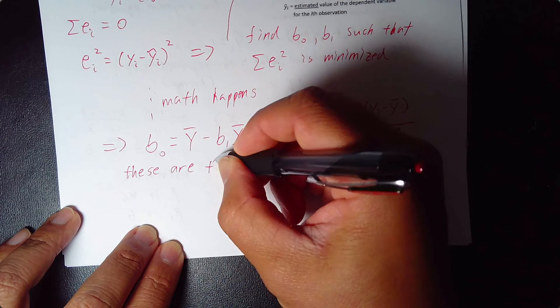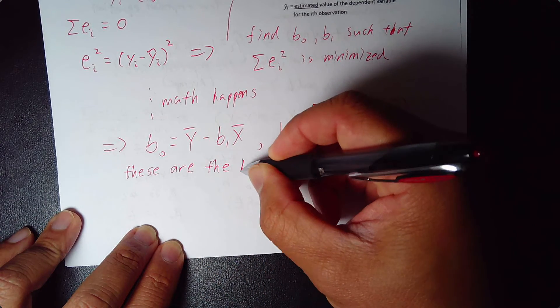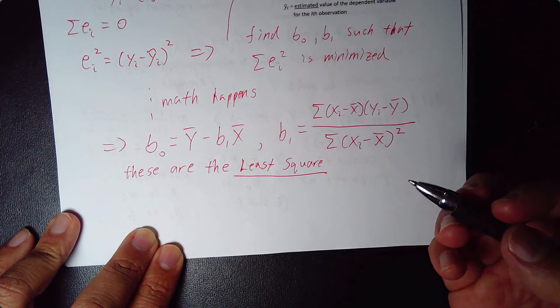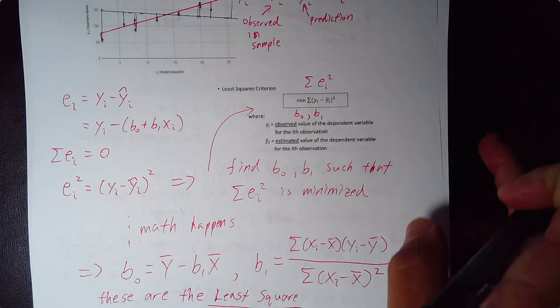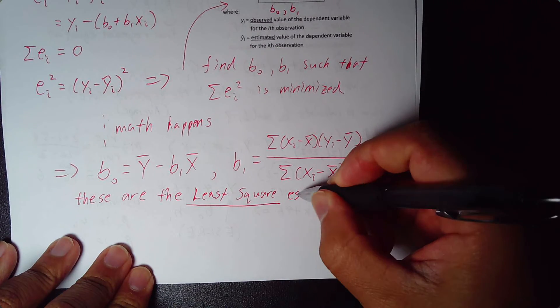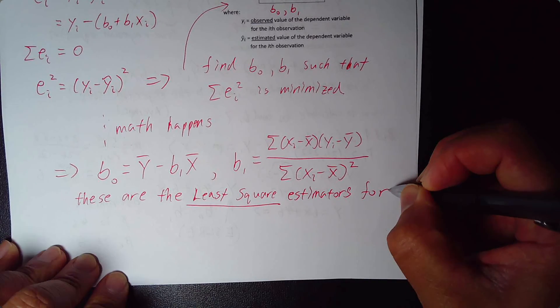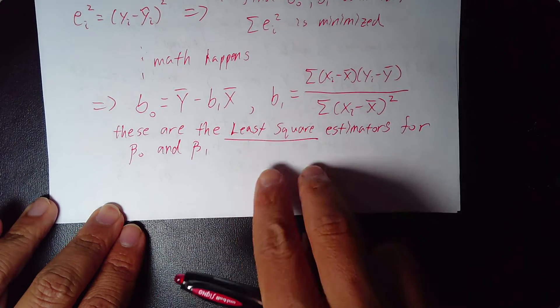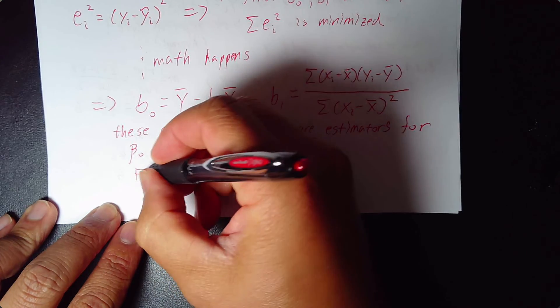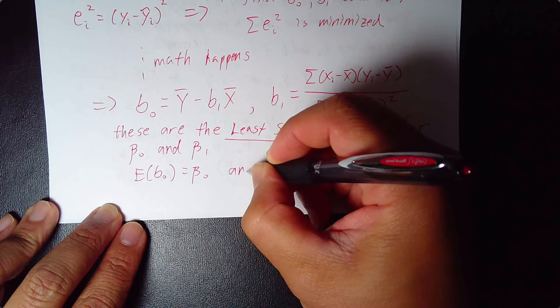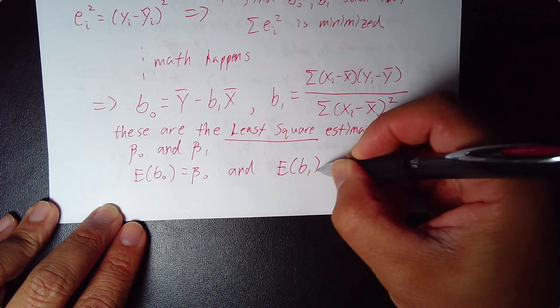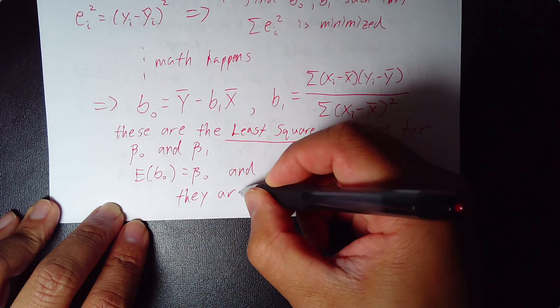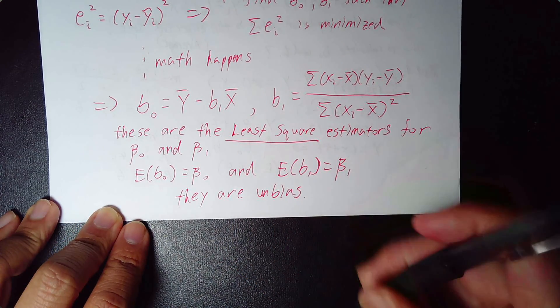Now we know why we call them the square. It's because we're minimizing the square of the residual. These are the least squared estimators for beta 0 and beta 1. And by the way, they are also, happen to be, unbiased estimators. That means expected value of b0 equals beta 0, and expected value of b1 equals beta 1. They are unbiased. And now we have our estimator.